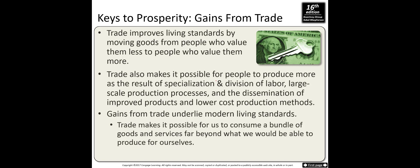Keys to prosperity: gains from trade improve living standards by moving goods from people who value them less to people who value them more. Trade also makes it possible for people to produce more through specialization, division of labor, large-scale production, and dissemination of improved products and lower-cost production methods. Gains from trade underline modern living standards — trade lets us consume far beyond what we could produce for ourselves.